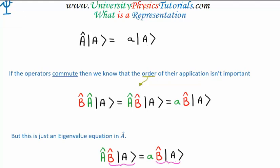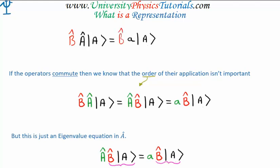Let's consider the eigenvalue equation associated with operator A: applying A onto a quantum state gives us the eigenvalue equation. Since operators A and B commute, the order of their application isn't important. We take operator B and apply it to both sides of this eigenvalue equation. Since B then A is equivalent to A then B (because they commute), we can swap the order — here A is applied first then B, and because they commute we can rearrange to have B first then A.